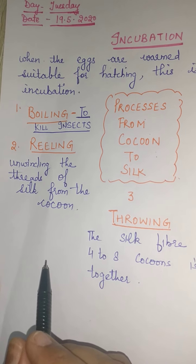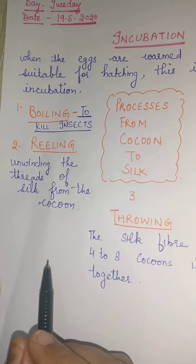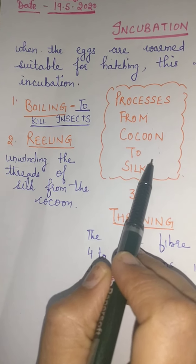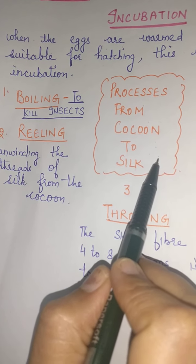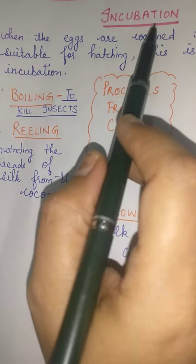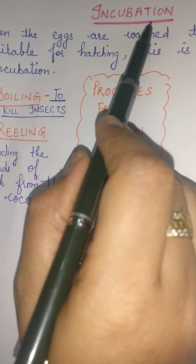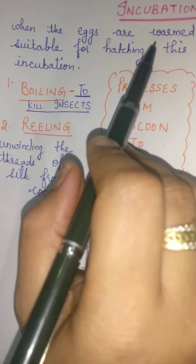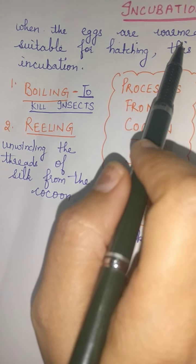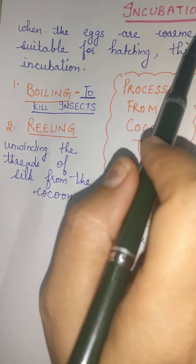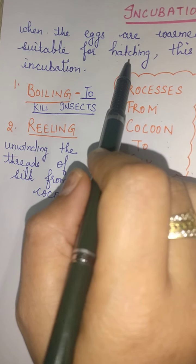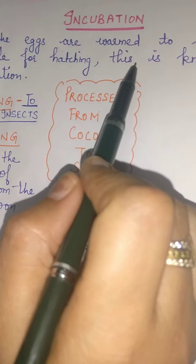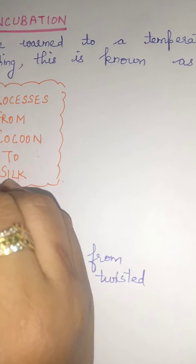Hello students, in this video we will study the various processes involved during silk production. Firstly, we will do incubation. The female silk moth lays hundreds of eggs at a time. These eggs need a suitable temperature for hatching. This is done through a process called incubation.